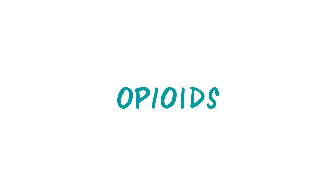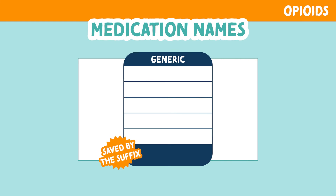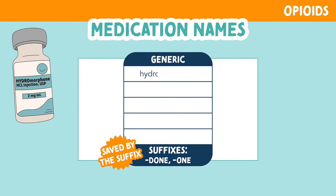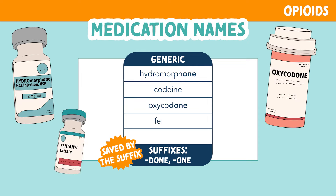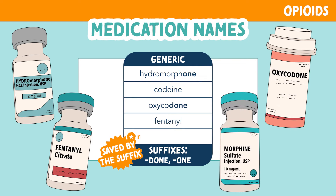Let's talk about opioids and look at the different names. We are saved by the suffix because many of these medications end in 'done' or 'one.' The common ones are hydromorphone, codeine, oxycodone, fentanyl, and morphine sulfate. Morphine sulfate is the gold standard analgesic.